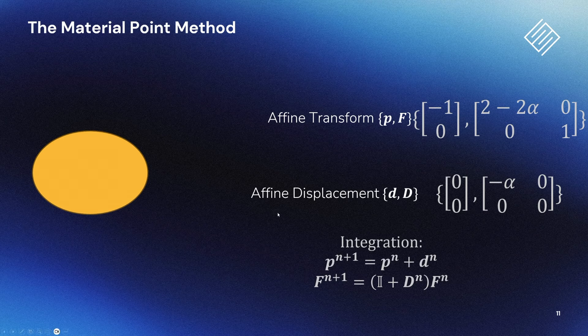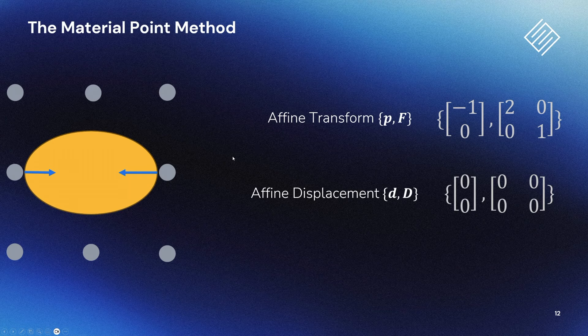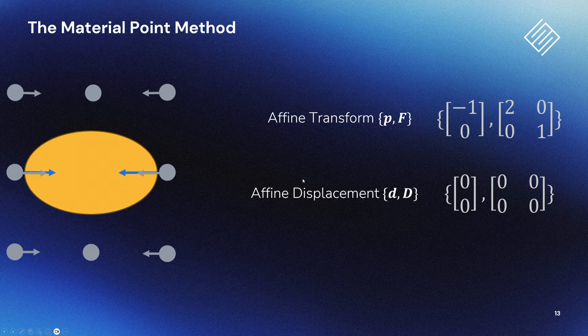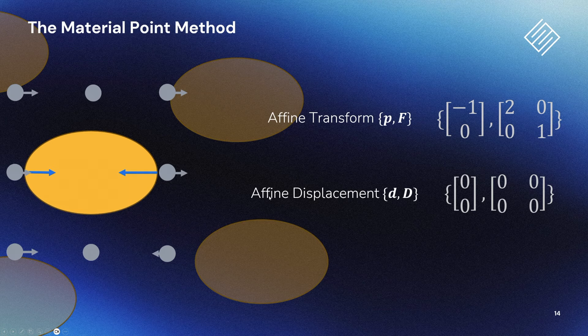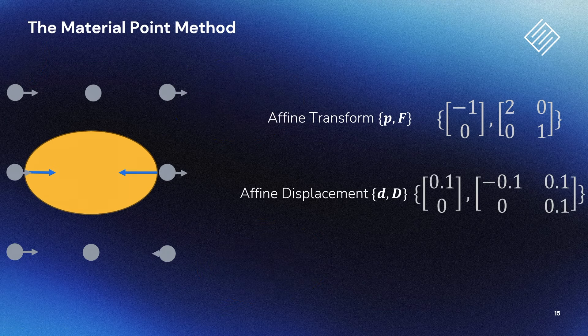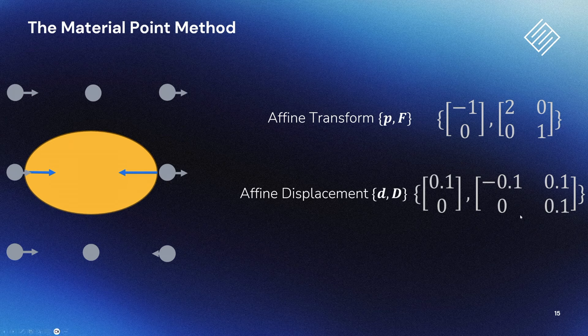But I missed out the other part of the method, which is that there's an extra step involved that allows particles to communicate between each other. The particles transfer their mass and momentum to a background grid, where it's combined with the momentum of other particles. Then we divide by the total mass to get a consistent velocity field throughout the grid. We then transfer this back to the particles and we can proceed with integration as before.